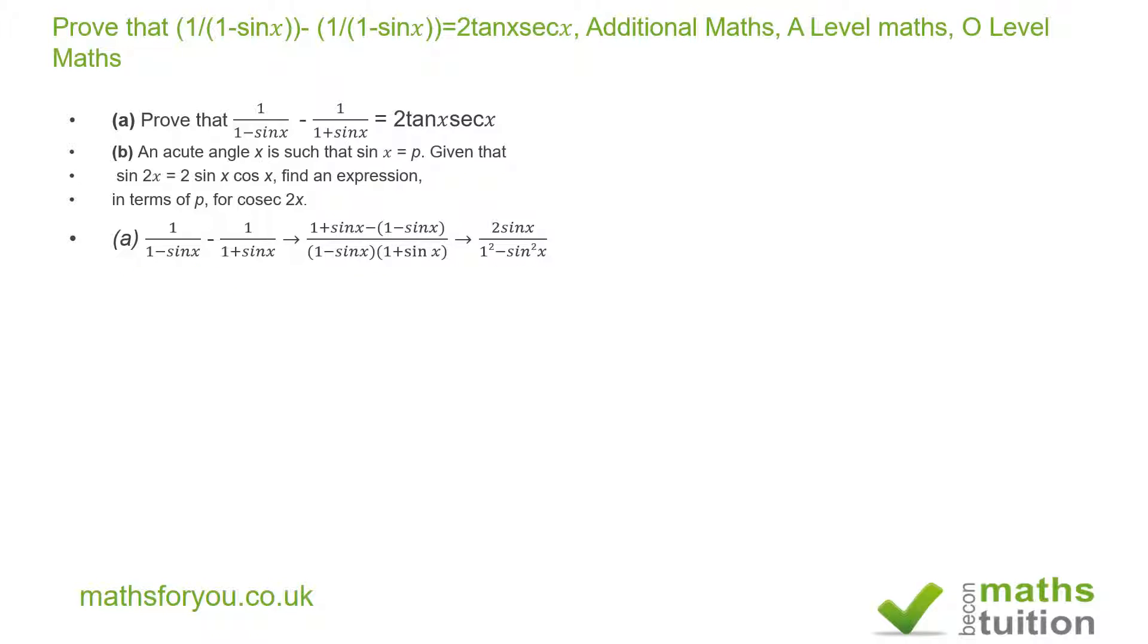And the numerator will reduce to 1 plus sin x minus 1 minus sin x, that becomes 2 sin x divided by 1 squared minus sin squared x. Now, 1 squared minus sin squared x becomes cos squared x because cos squared x plus sin squared x is 1. So we have 2 sin x over cos squared x.